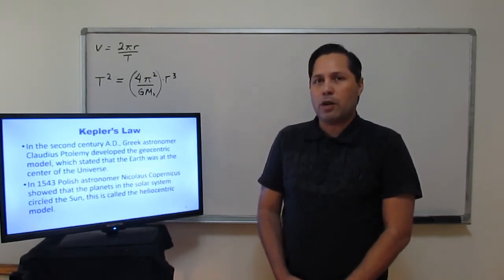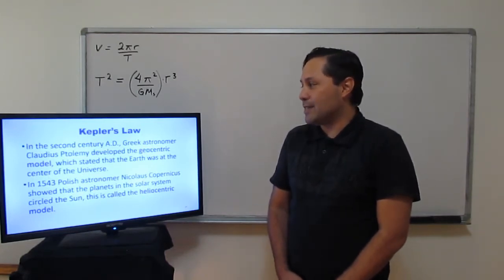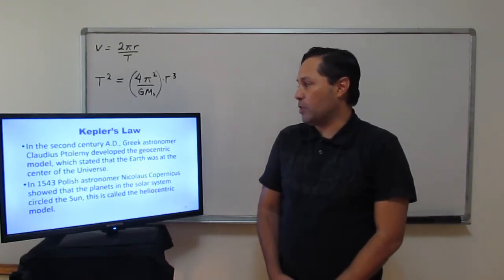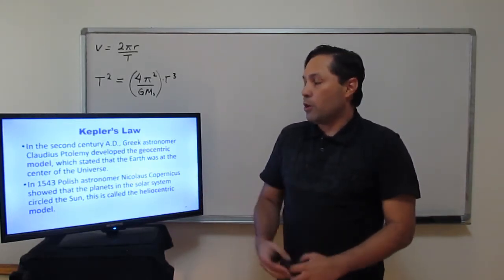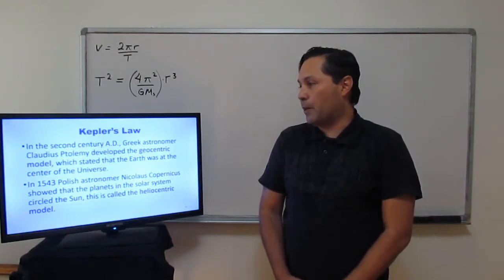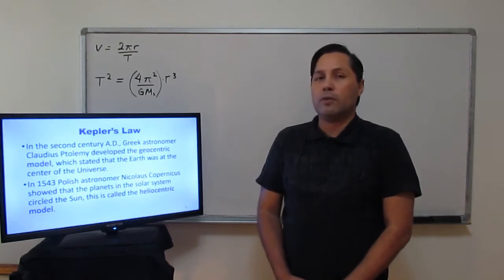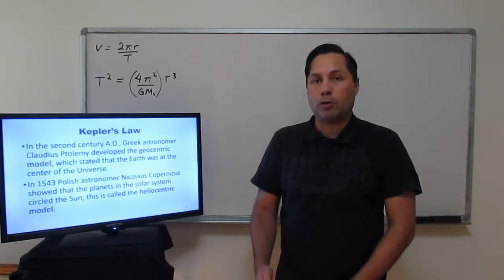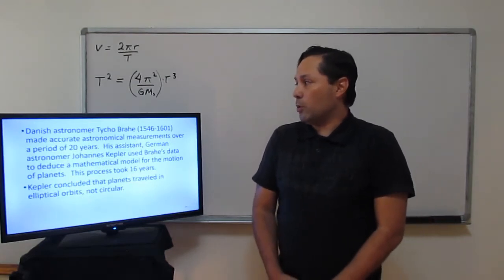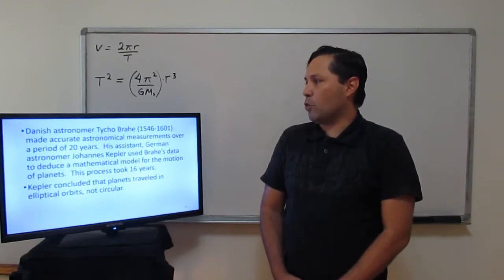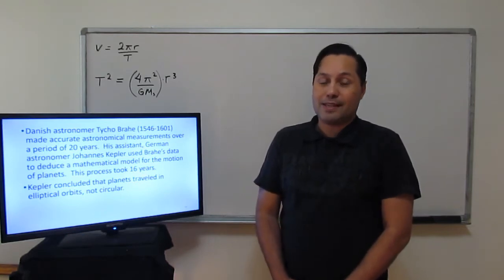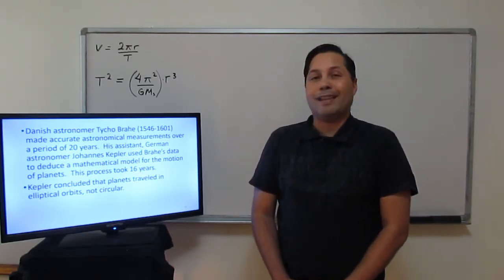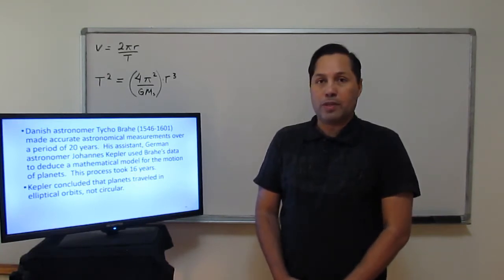We'll start with a little history on Kepler's Laws. In the second century AD, Greek astronomer Claudius Ptolemy developed a geocentric model, stating Earth was at the center of the universe and everything else circled around us. In 1543, Polish astronomer Nicholas Copernicus showed that the planets circled around the sun — the heliocentric model. Danish astronomer Tycho Brahe made accurate astronomical measurements over 20 years, and his assistant, German astronomer Johannes Kepler, used Brahe's data to deduce the mathematical model for planetary motion over 16 years. Kepler concluded planets traveled in elliptical orbits, not circular orbits as Copernicus had stated.